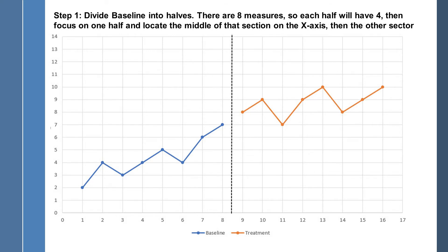So to do the split middle technique, step one, divide the baseline into halves. So we're just going to deal with the baseline phase at this point in time. We have eight measures in the baseline. So if we divide the baseline into two halves, we're going to take the first four and the second four and evaluate those one at a time. So we put a line in here in order to separate the two halves.